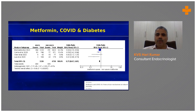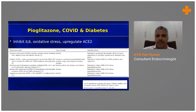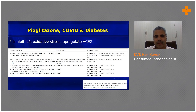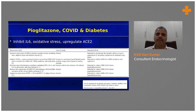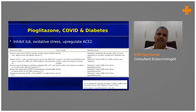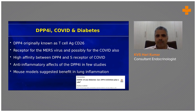Data suggests that metformin, if otherwise indicated, can be safely used. Regarding pioglitazone — not a very popular drug in type 2 diabetes management — it has some anti-inflammatory benefits in relation to COVID, but the negative effect is that it may upregulate ACE2, which increases the portal of entry for the virus. So it's a double-edged sword with both benefits and drawbacks.